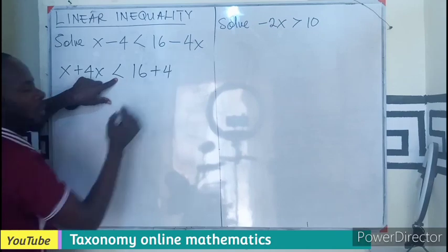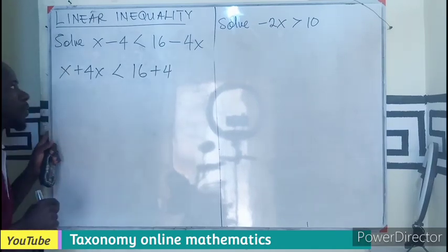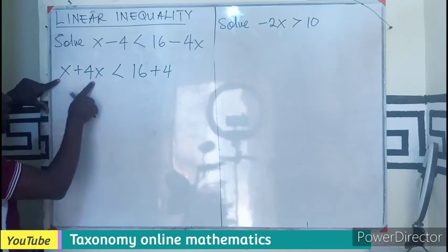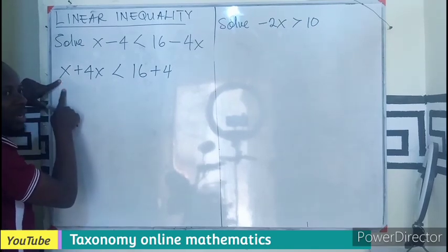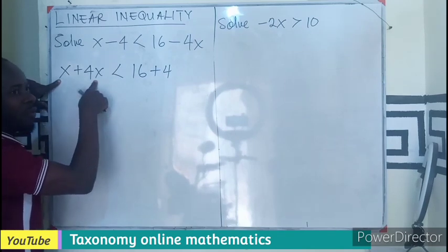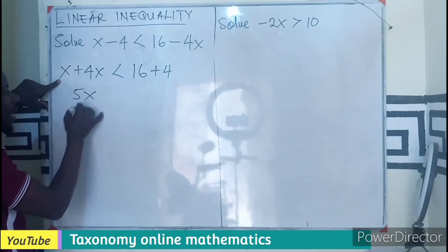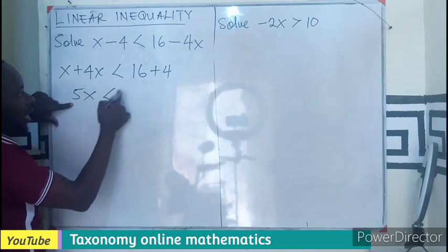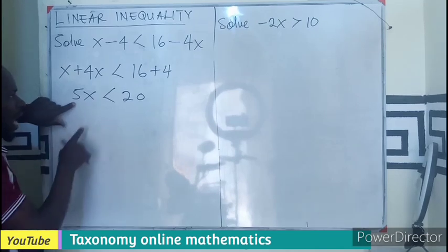So my x will be here plus 4x, now less than 16, then plus 4. Since I'm adding 4 to both sides and 4x to both sides, this is going to be x + 4x. This x is just one, this is four. Since they are the same kind, they become five, less than 20.